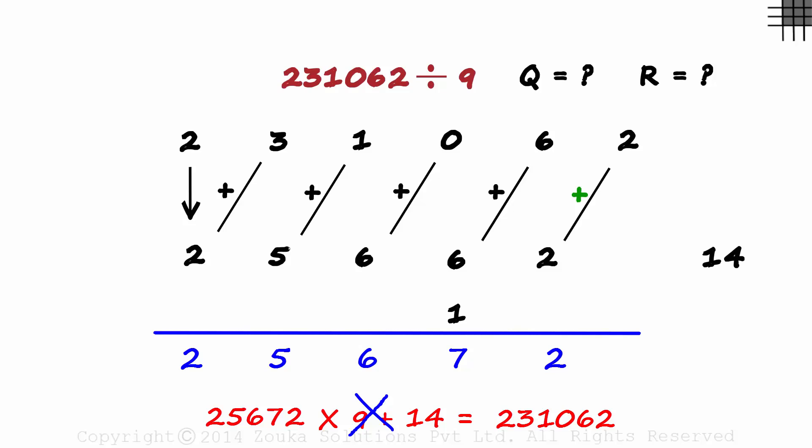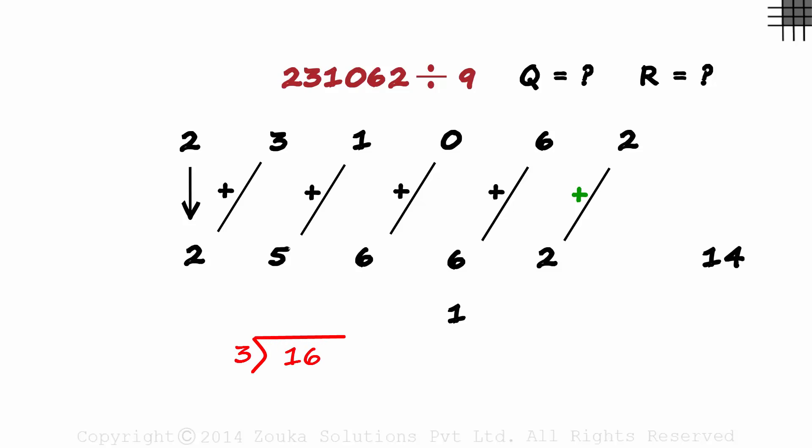Tell me, has the remainder ever been greater than the divisor? Let me give you an example. If we divide 16 by 3, we write the quotient as 5 and the remainder as 1, right? Or do we write the quotient as 4 and the remainder as 4? Undoubtedly, the first one is correct.